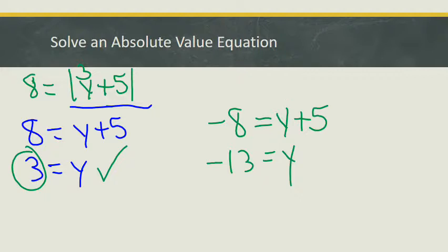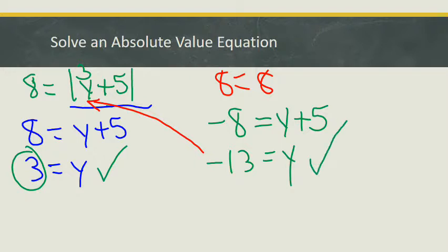Let's look at this second one. On this second one, I'm saying that y is equal to minus 13. So again I'm going to plug this minus 13 in for y: minus 13 plus 5 is going to give me minus 8. But I'm talking about the absolute value of minus 8, and the absolute value of minus 8 is, in fact, just 8. And again, 8 will equal 8. So minus 13 is also a possible solution. Both solutions — where y equals 3 and y equals minus 13 — both come up with the true statement that the absolute value of y plus 5 is equal to 8.